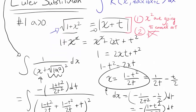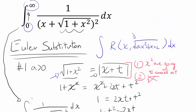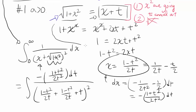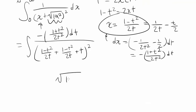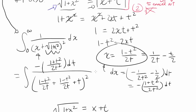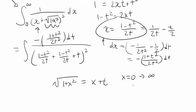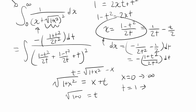Before we proceed, let's think about the bounds. We're going from 0 to infinity in terms of x — what are the corresponding t values? From our substitution, square root of 1 plus x squared equals x plus t. When x equals 0, we get square root of 1 equals t, so t equals 1. As x approaches infinity, t equals square root of 1 plus x squared minus x, which approaches square root of x squared minus x, which is x minus x, or zero. So t goes from 1 to 0.